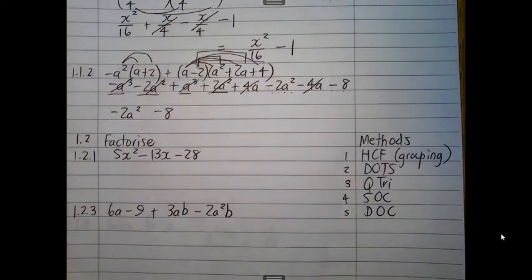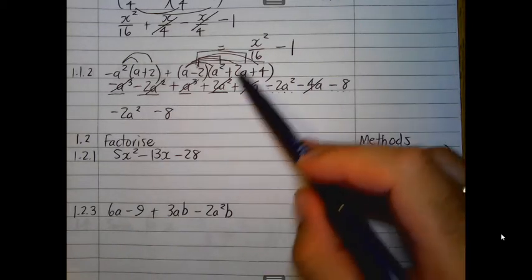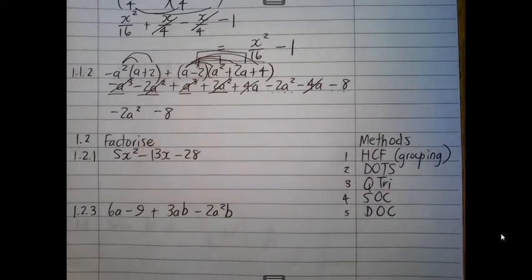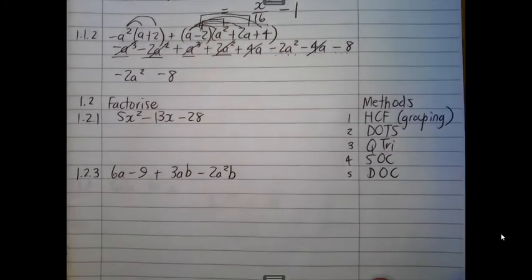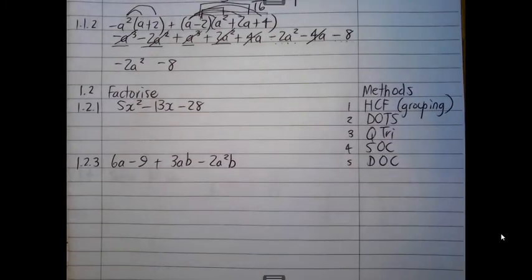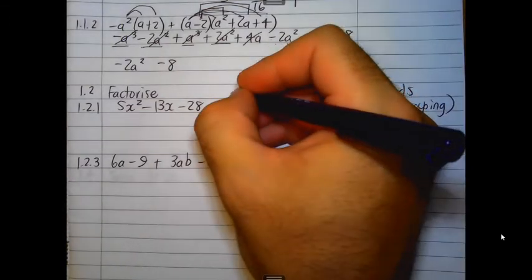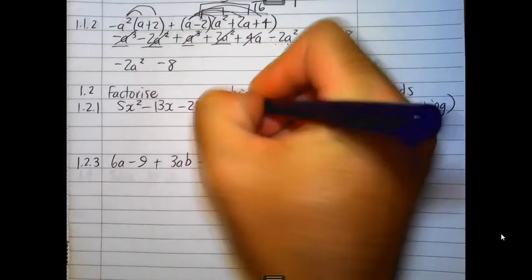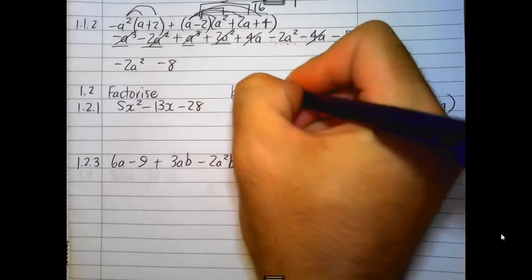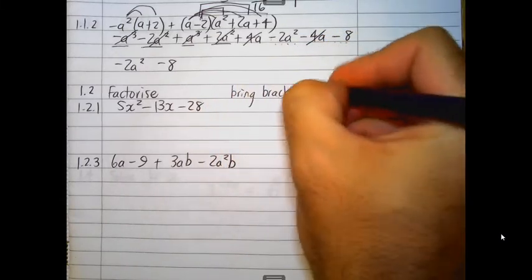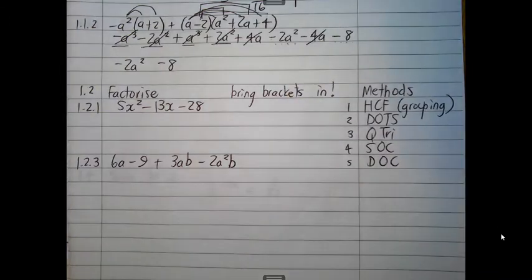We've got a 4A over there and a negative 4A over there. They're going to cancel. And we've got a negative 8 left over there. Once again, those two terms cannot join together as they are unlike terms. So, those two questions are simplifying questions. You see our answers in the end have got no brackets.